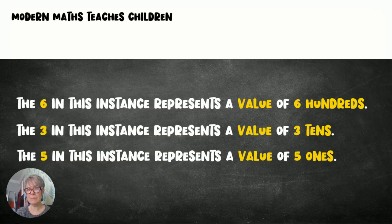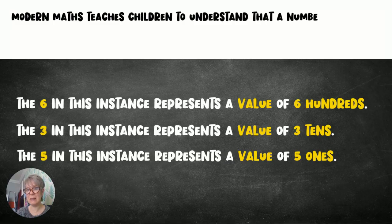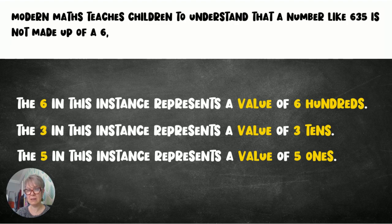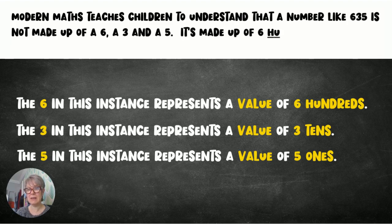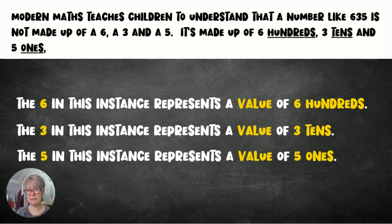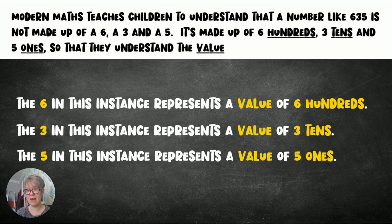Modern maths teaches children to understand that a number like 635 is not made up of a six, a three, and a five — it's made up of six hundreds, three tens, and five ones, so that they understand the value of each digit.